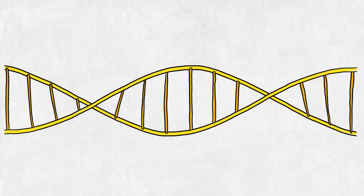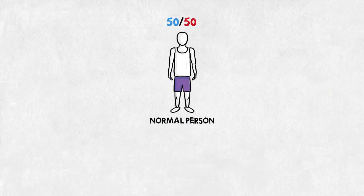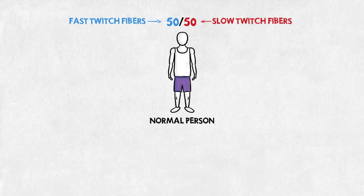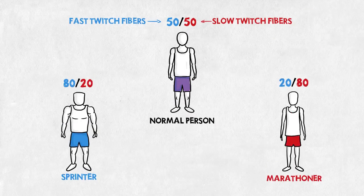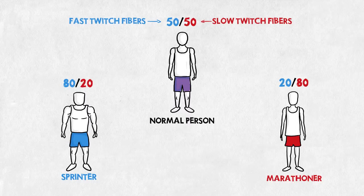On top of the difference in training, genetics also play a part. A normal person has about an even amount of fast and slow twitch fibers. But the persons that make it to the top tend to have more of one kind. So even untrained, they wouldn't have the same physical appearance.